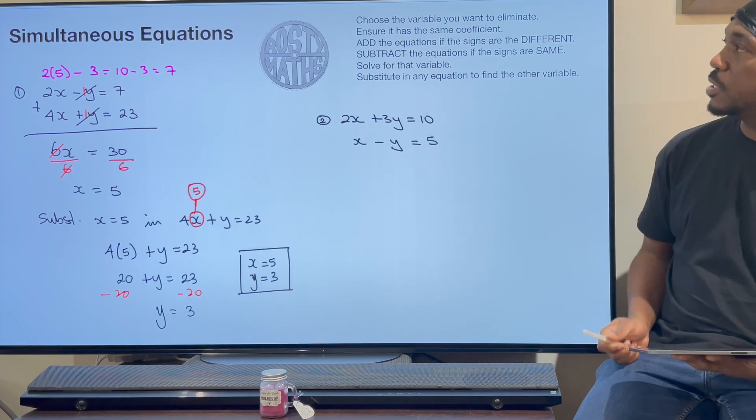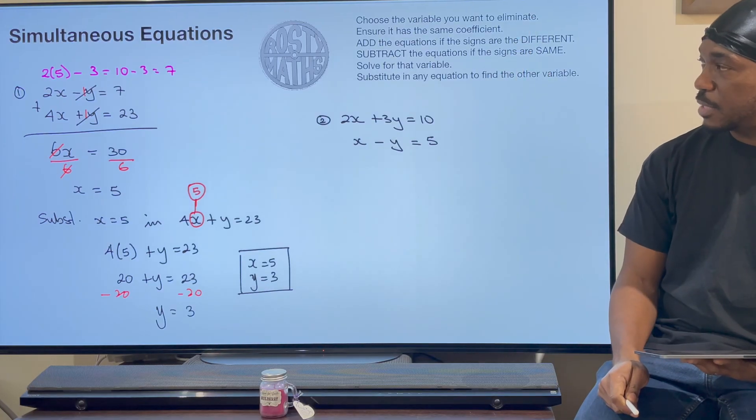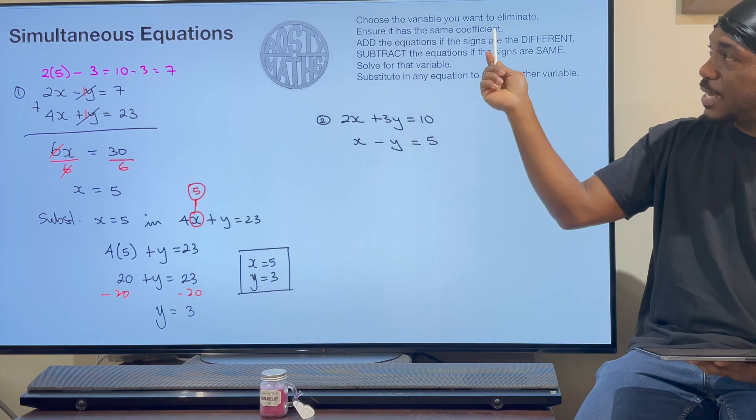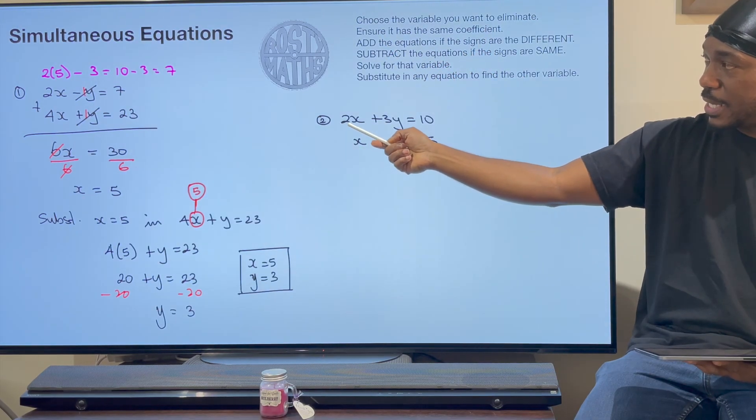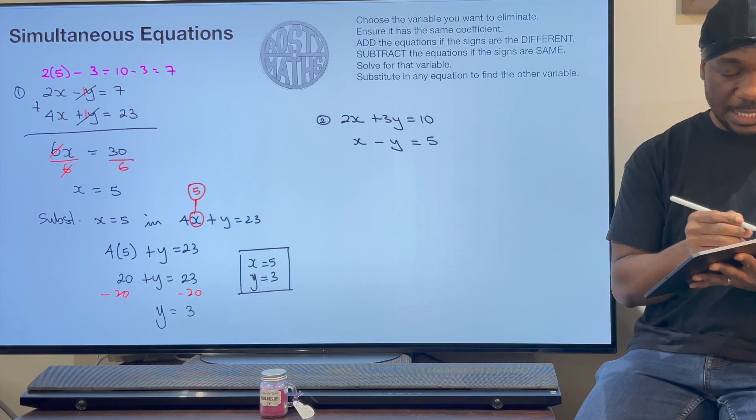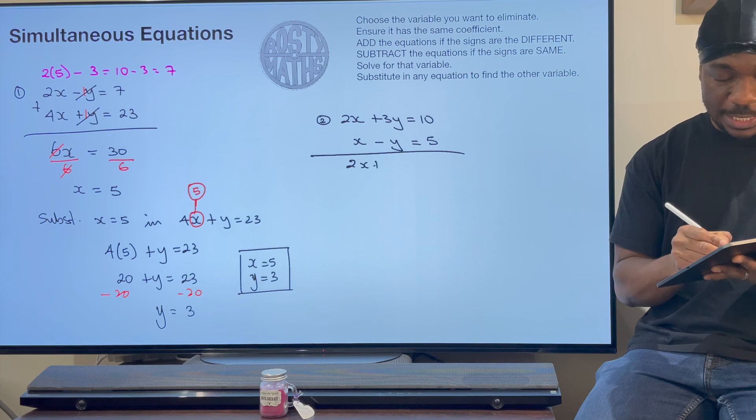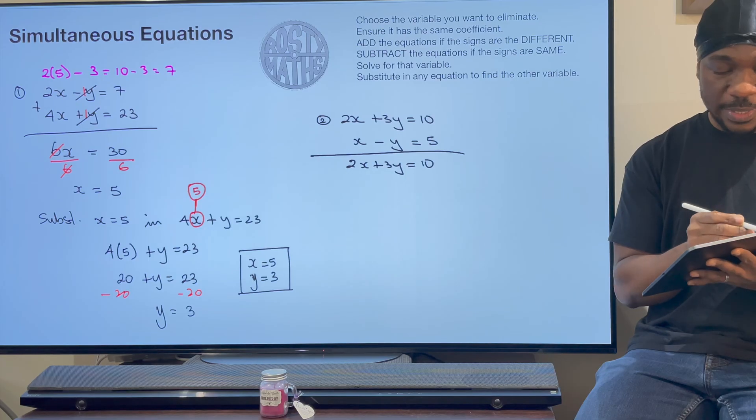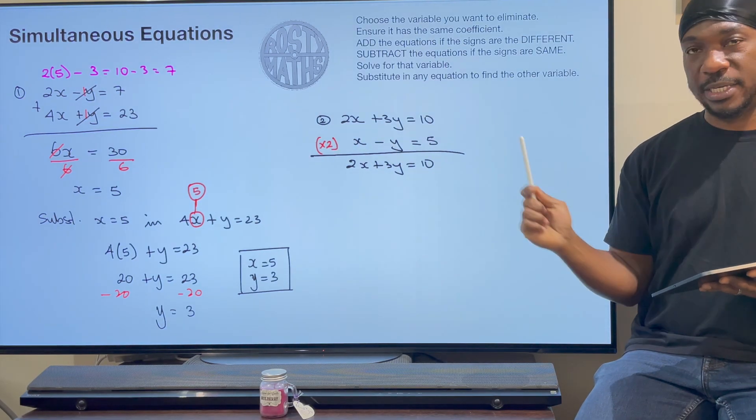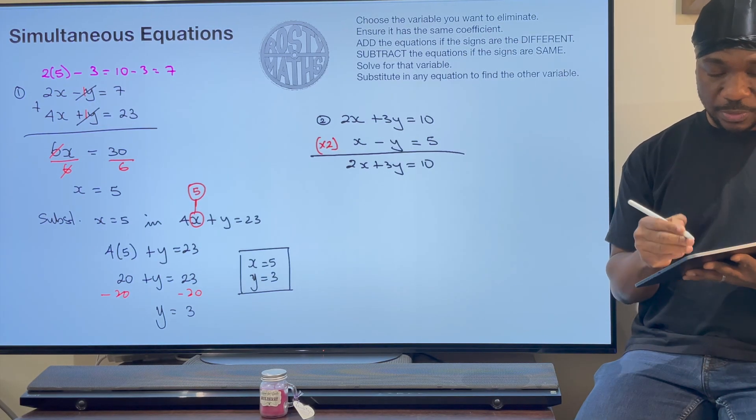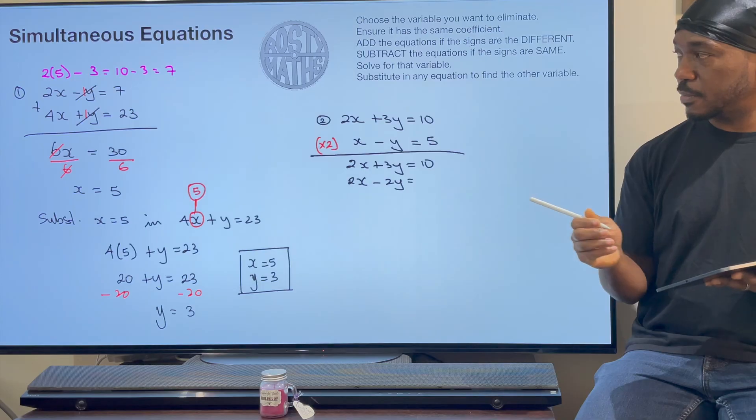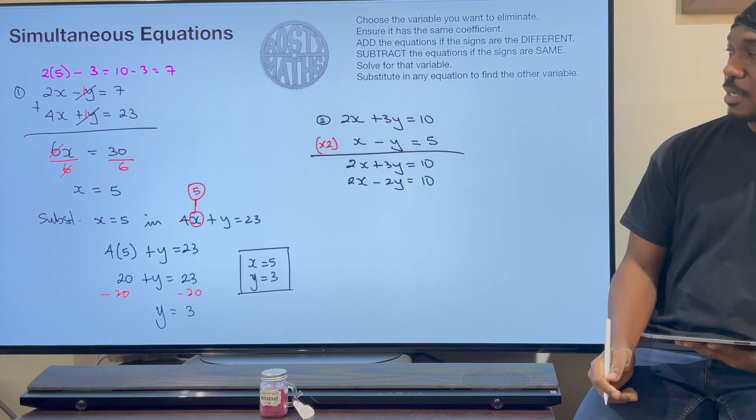Let's go through the rules again. Choose the variable you want to eliminate. This time I'm not going to choose y because I don't want you to get too used to y being the one. I'm going to choose x. I want to eliminate x. Next thing, ensure it has the same coefficient. Well, it doesn't because this one has a 2 and this one has a 1. If it doesn't, I need to make it have the same coefficient. I'm going to keep the 2x + 3y equals 10. But in order to make this a 2x, I need to multiply this whole one by 2. So 2 times x is 2x. 2 times y is 2y equals 2 times 5, that gives me 10.